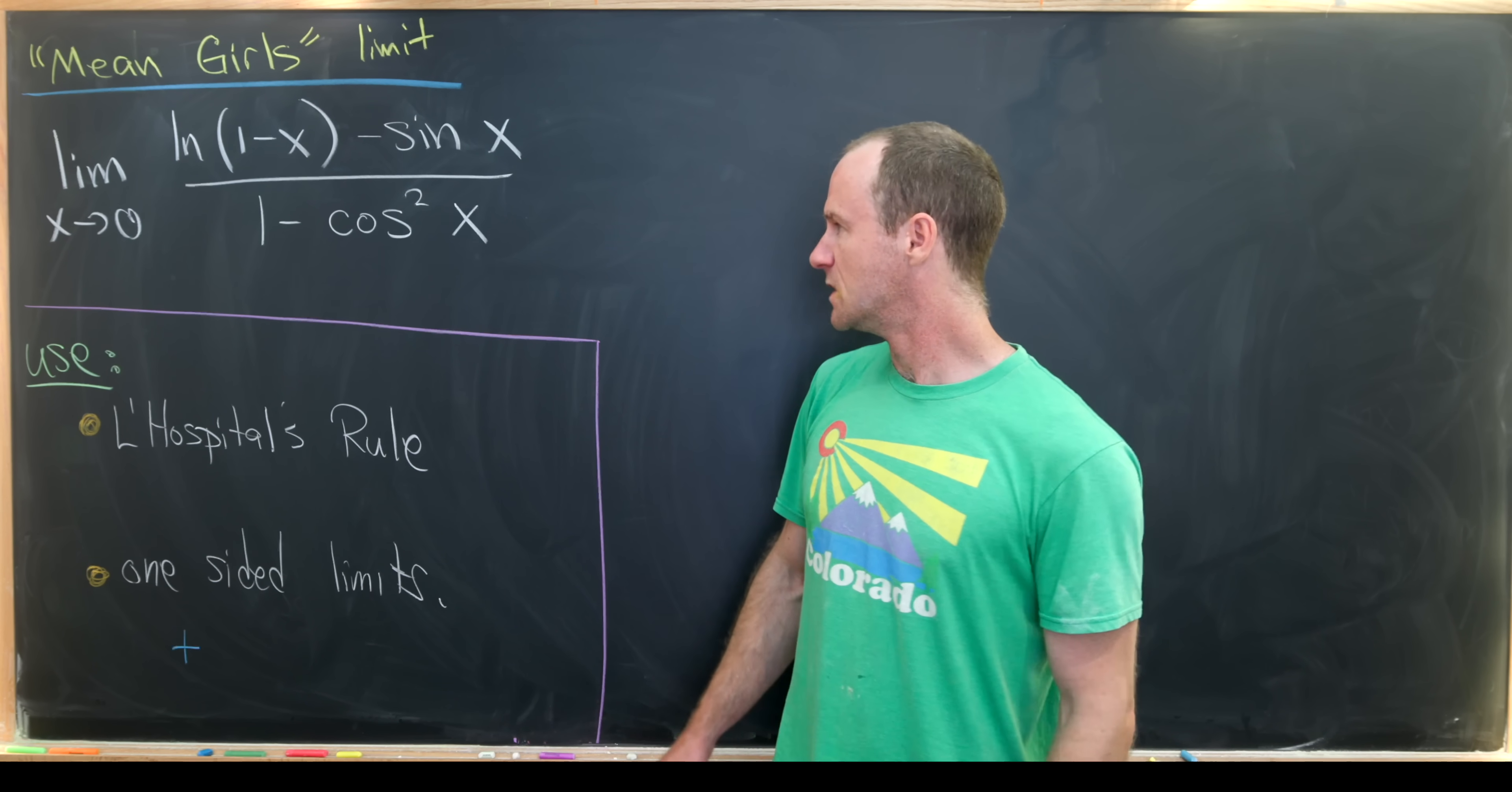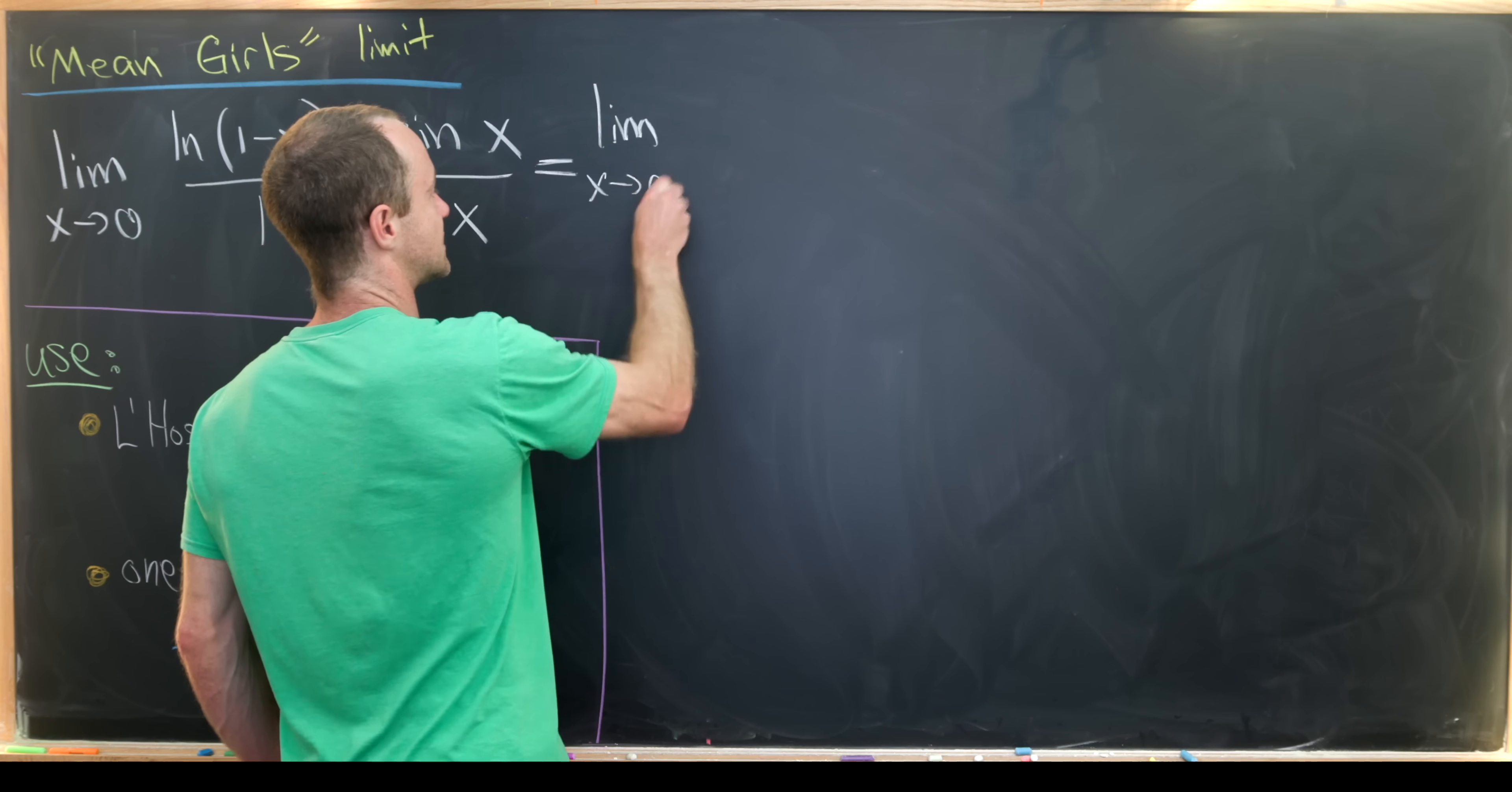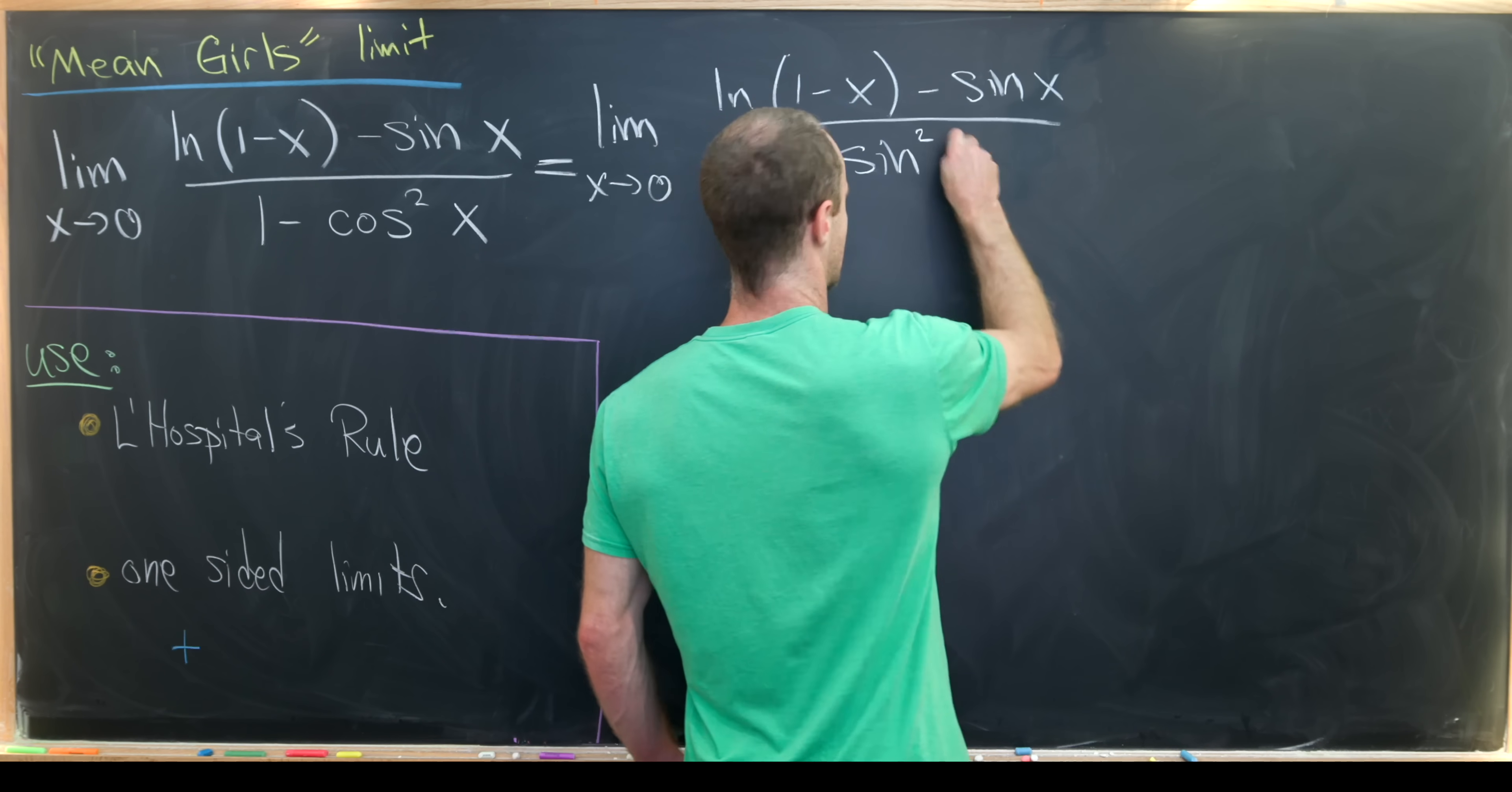So let's get into this first method. Before we apply L'Hopital's rule, let's notice that this denominator, 1 minus cosine squared, can easily be written as sine squared using the Pythagorean trig identity. So that means we have the limit as x goes to 0 of the natural log of 1 minus x minus sine of x over sine squared of x.